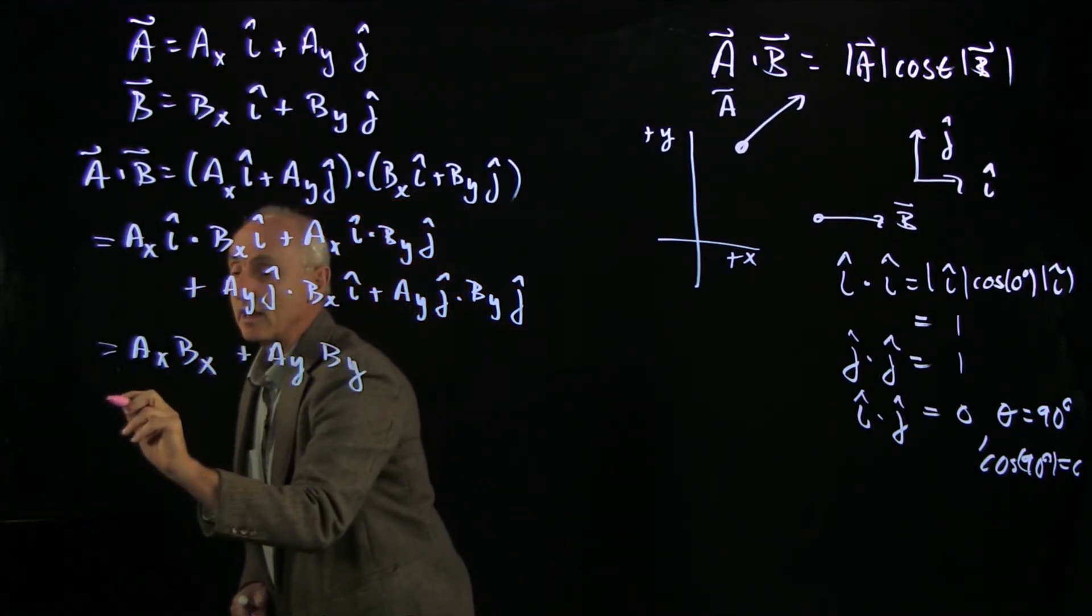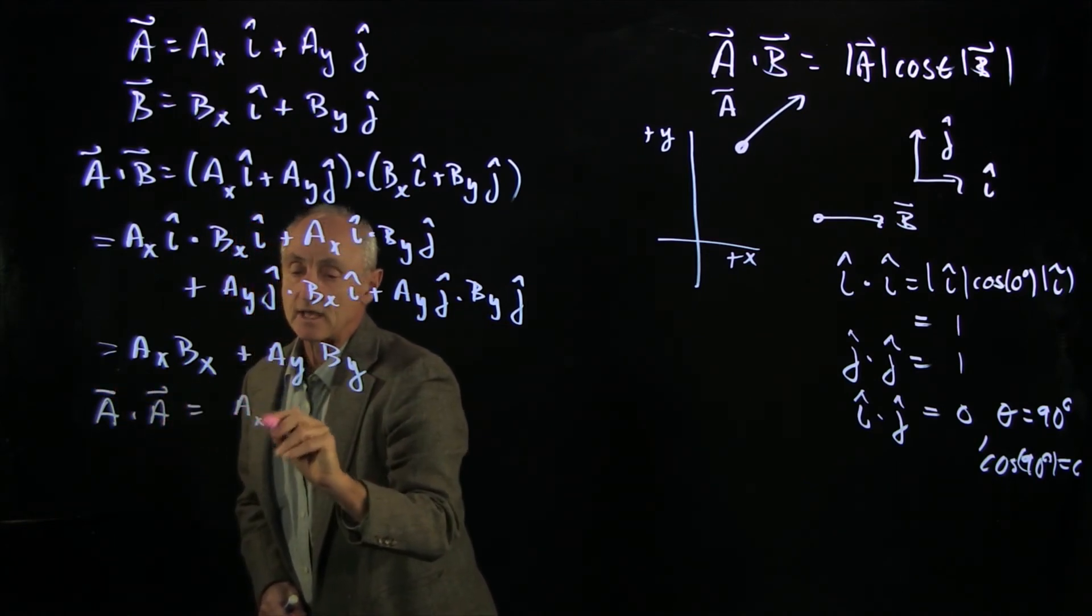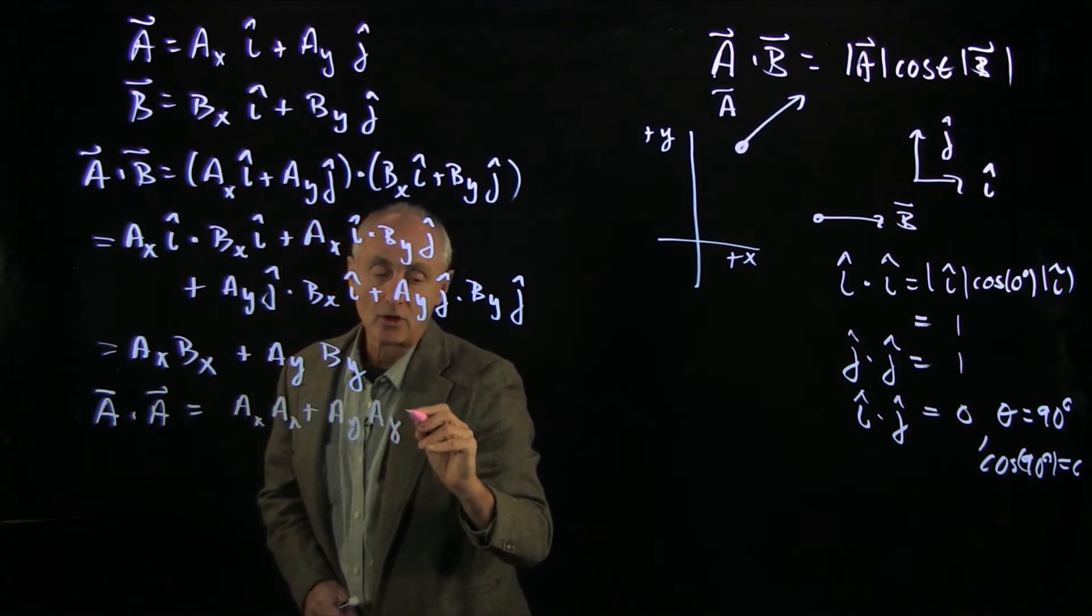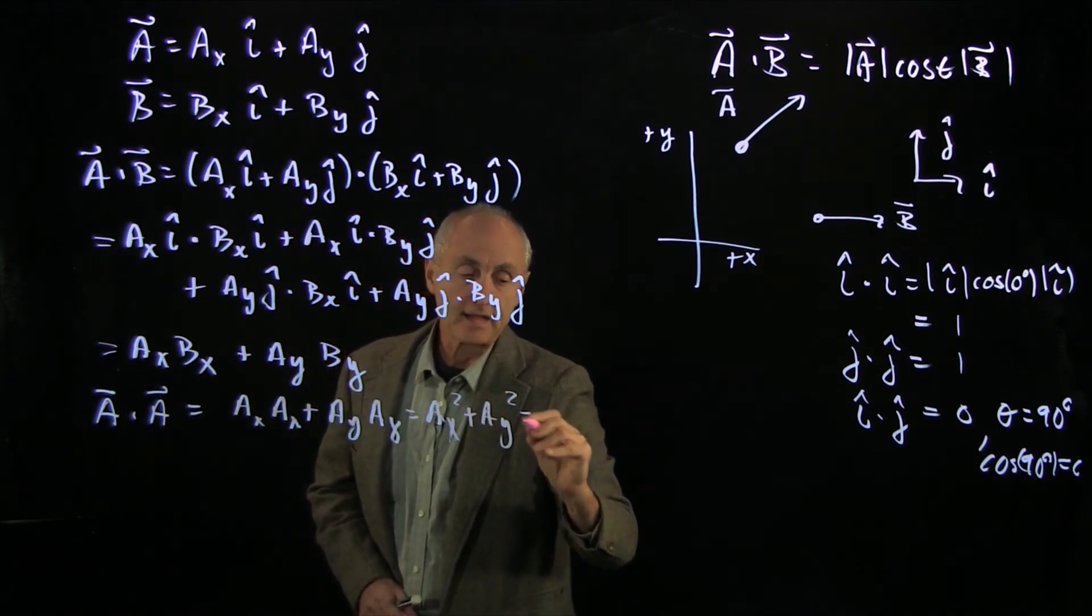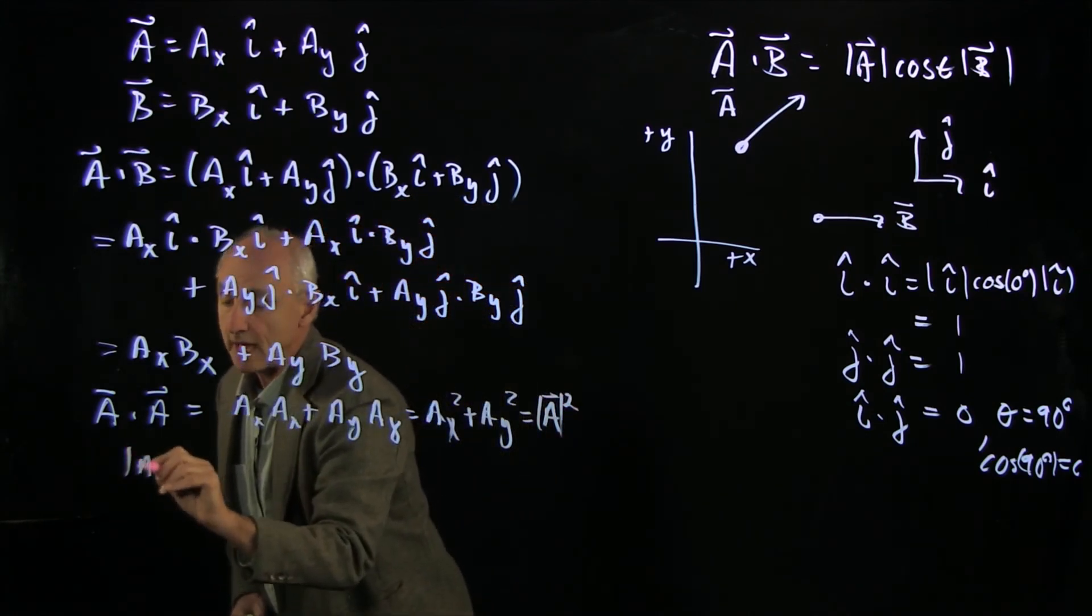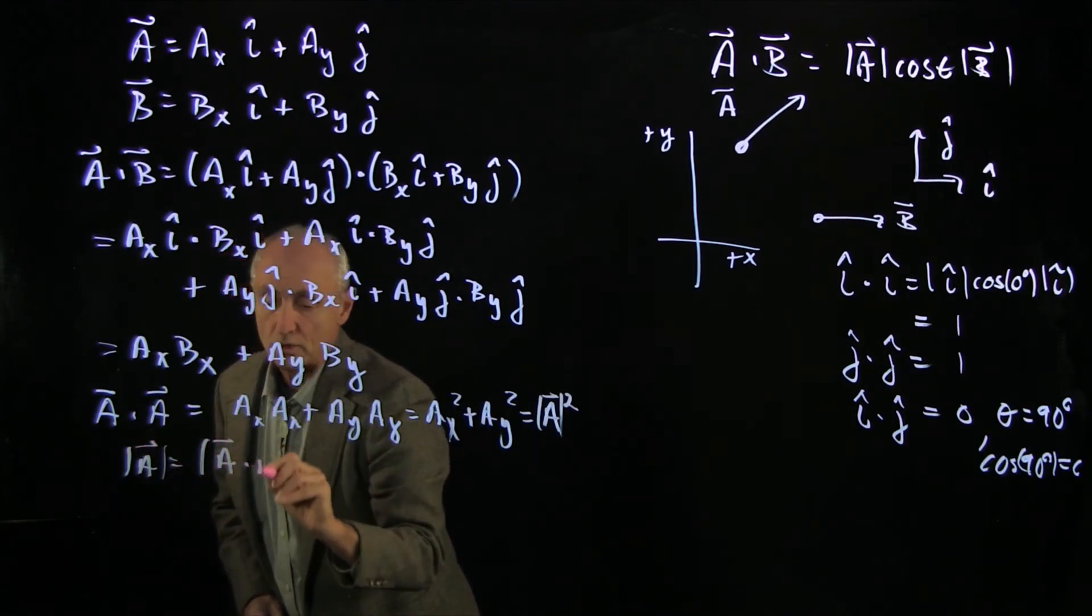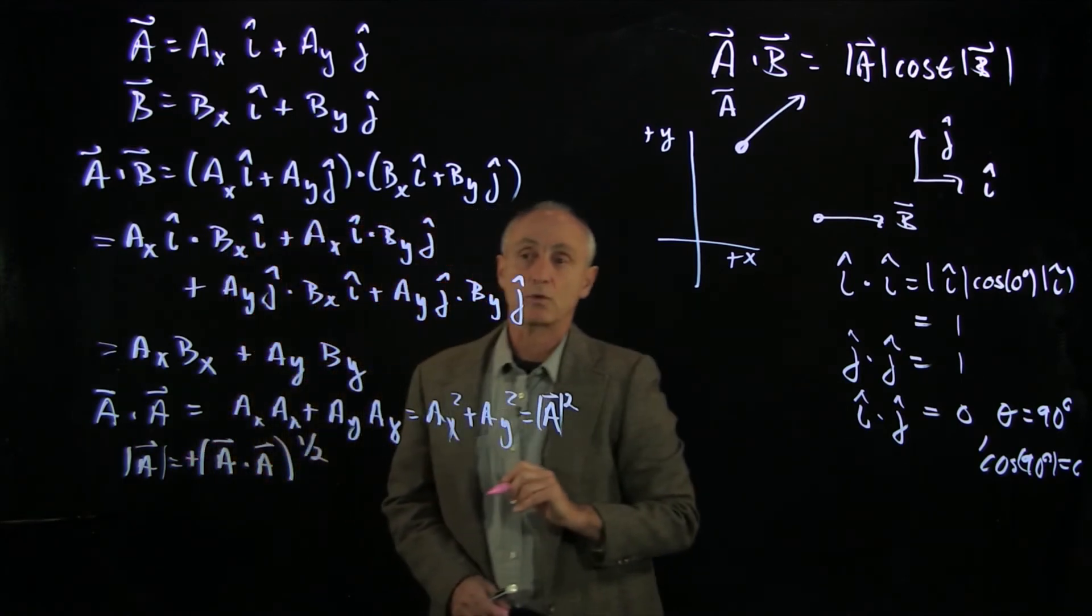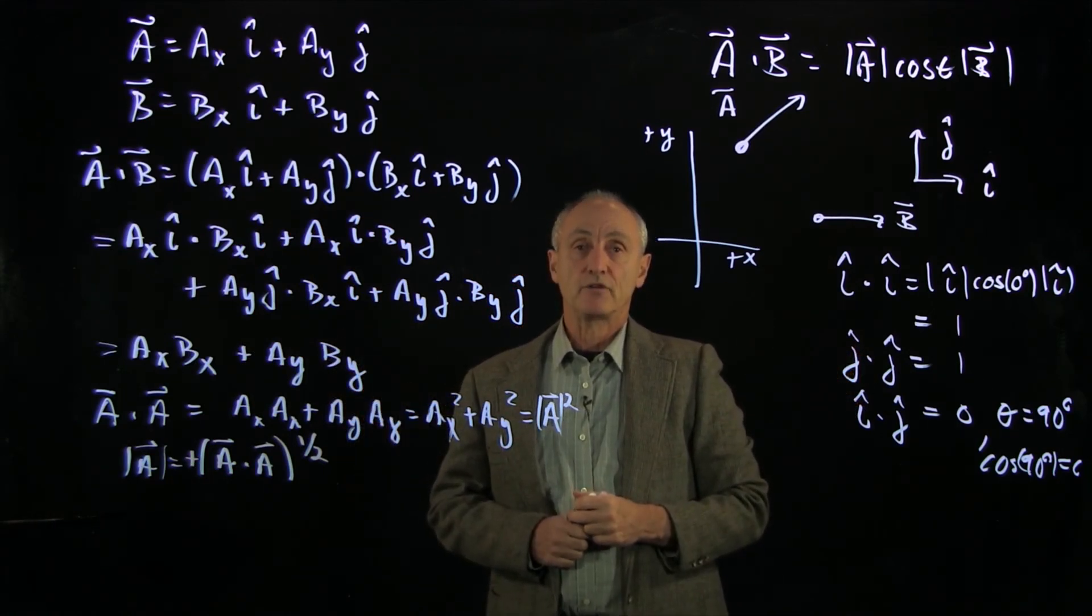Now, notice that if we dotted a vector A with itself, that would just be ax ax plus ay ay, which is the components squared. And that's equal to the magnitude of the vector squared. And so we can say that the magnitude of the vector, of any vector, is you take its dot product with itself and take the square root. But remember, we always take the positive square root, because magnitudes are positive. And that's how we calculate the scalar product for vectors.